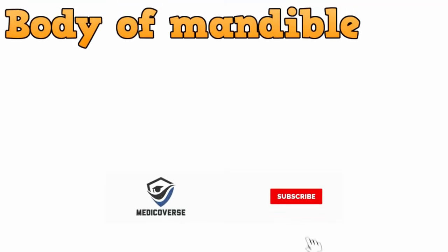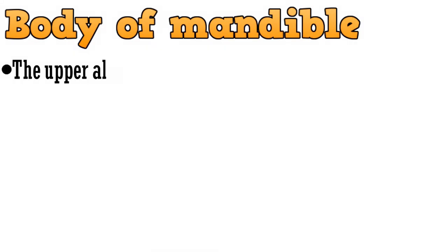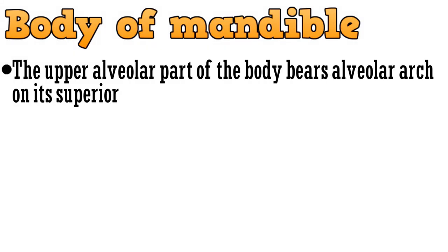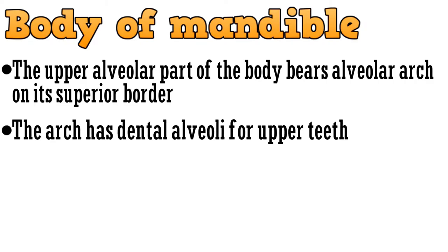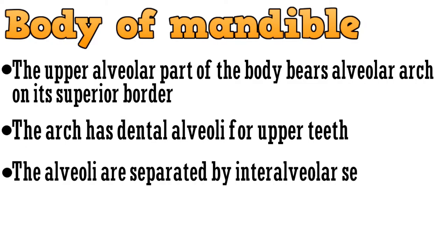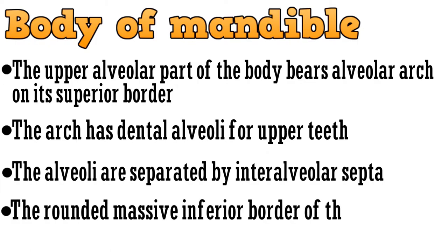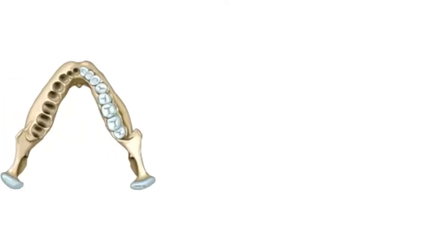Starting with the body of mandible: the upper alveolar part of the body bears the alveolar arc on its superior border. The arc has dental alveoli for the upper teeth, and the alveoli are separated by the inter-alveolar septa. The rounded, massive inferior border of the body forms the base of the mandible.